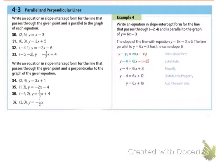4.3 was parallel and perpendicular lines. The first section, they want you to do parallel, and then the second one, they want you to do perpendicular. Parallel lines have the same slope. Perpendicular lines have opposite reciprocal slopes. So remember that.